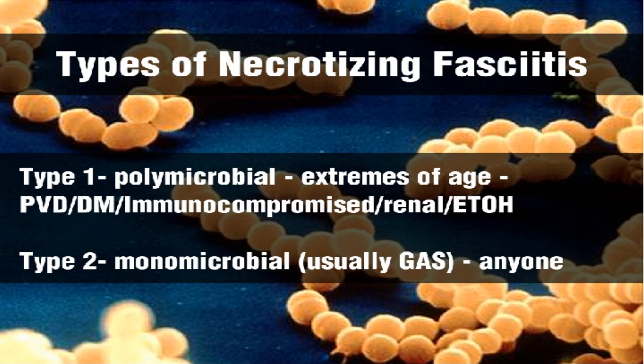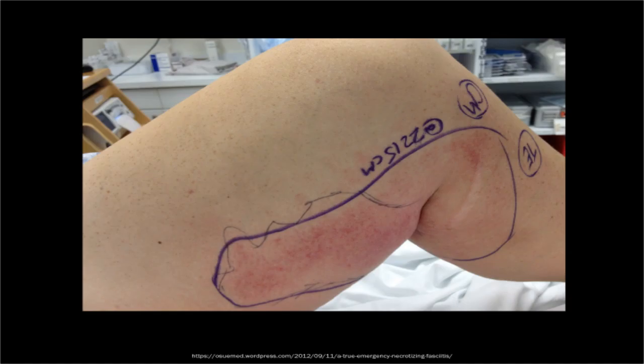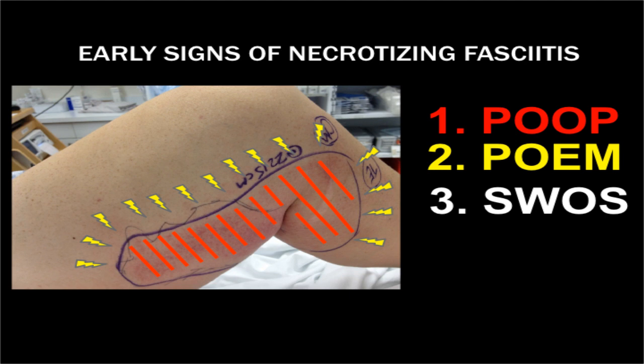Type 2 is usually caused by one organism, most commonly group A streptococcus. The scary thing about this is that it can affect anyone, any age, any comorbidities. For early signs of necrotizing fasciitis, I want you to remember the poop poem: pain out of proportion to exam, and then pain outside the erythematous margin. You should also be suspecting this in patients who present with sepsis without a clear source.